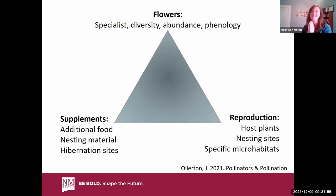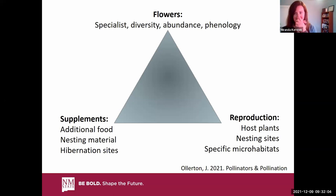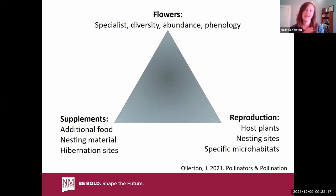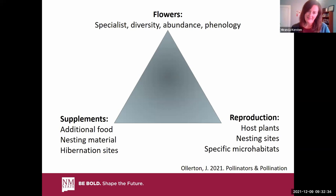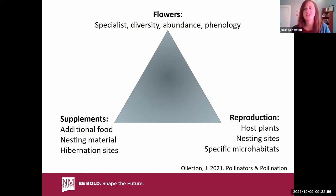This figure shows the habitat needs for pollinators, which works well for other beneficial insects too. For our insects to complete their life cycles, we need to make sure they have resources for food, reproduction, nesting, and overwintering habitat. They will need flowers to feed on, places to reproduce that vary based on the insect you're trying to promote, and supplementary resources — additional food for predatory insects, nesting material for those that build nests in wood, and hibernation sites.